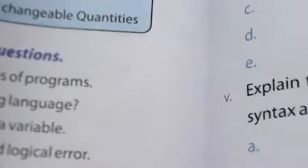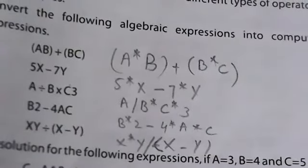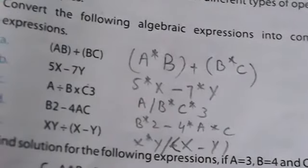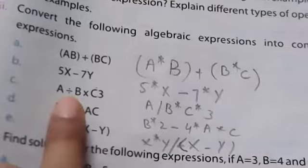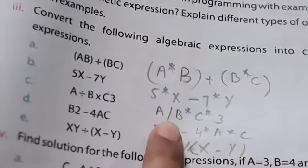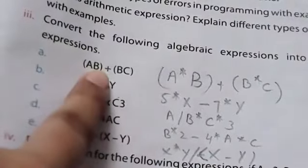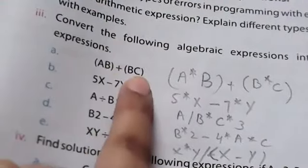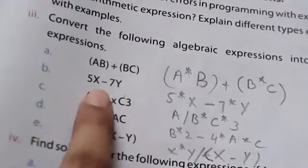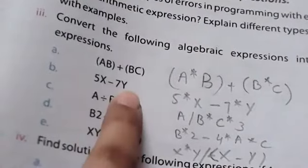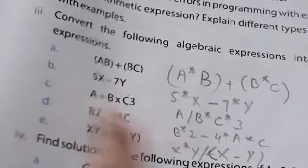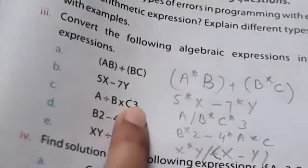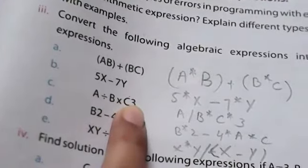The next question is: convert the following algebraic expressions into computer expressions. Where you multiply two numbers, you use the asterisk (*) symbol. Where you divide, you use the forward slash (/). For example, if A and B are multiplied, you use A*B; if B and C are divided, you use B/C. For A divided by B multiplied by C and 3, you write A/B*C*3.